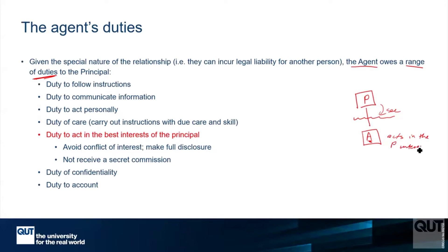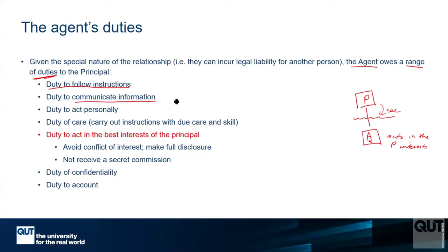So they're acting for the principal, not for themselves. An agent has the duty to follow instructions — if the principal wants something done a certain way and you've agreed to that, you must follow those instructions. You'll also have a duty to communicate relevant information back to the principal; so if something happens in the shop, you communicate it back to the boss.